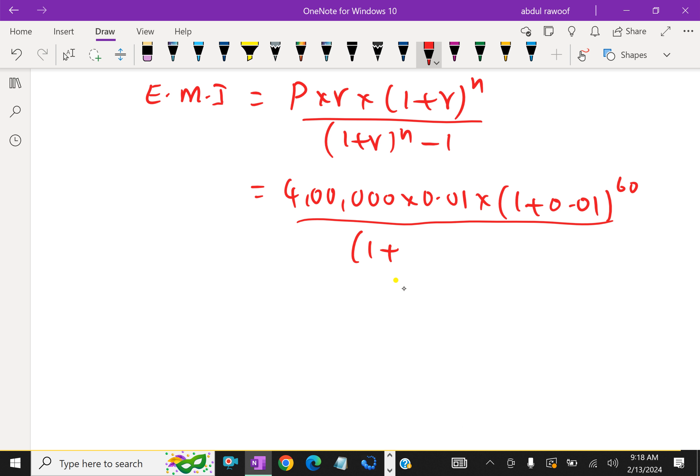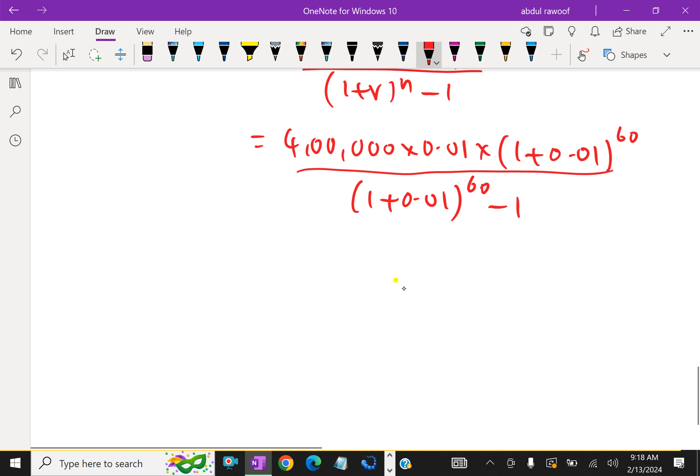(1 plus R) to the power n minus 1. Which is equal to 4 lakhs into 0.01 into 1.01 to the power 60 over 1.01 to the power 60 minus 1.